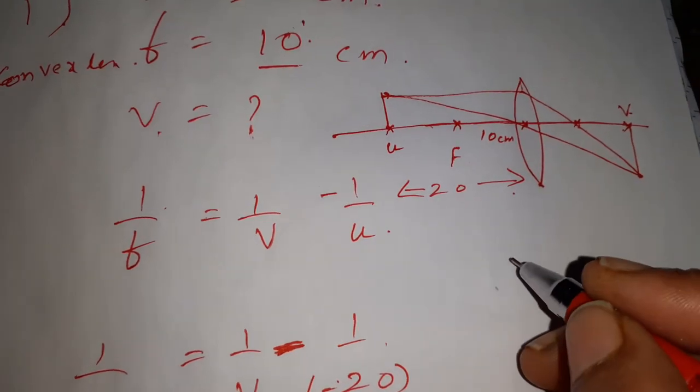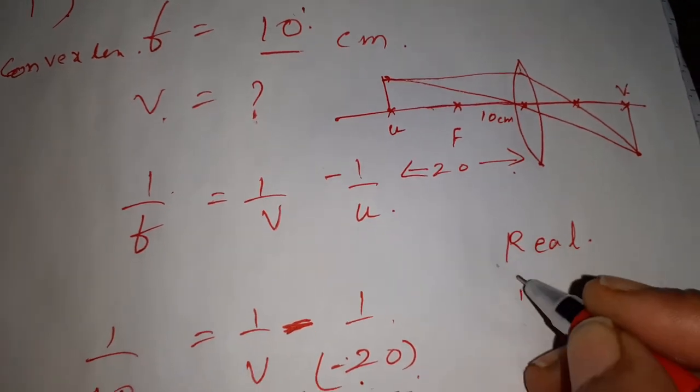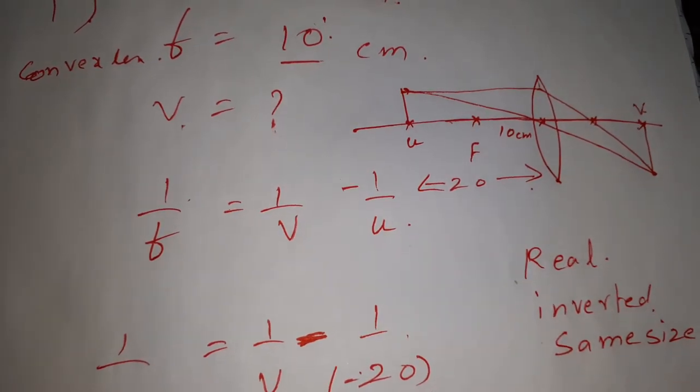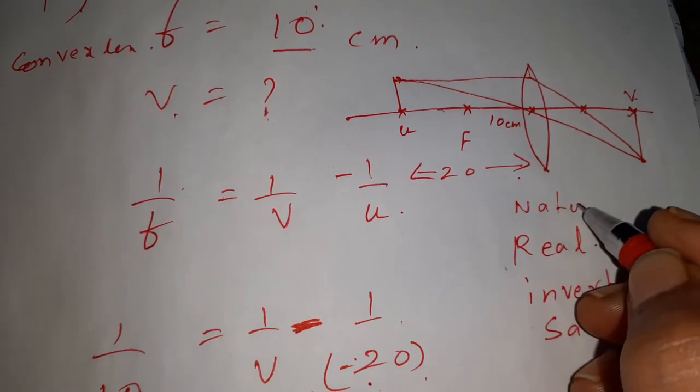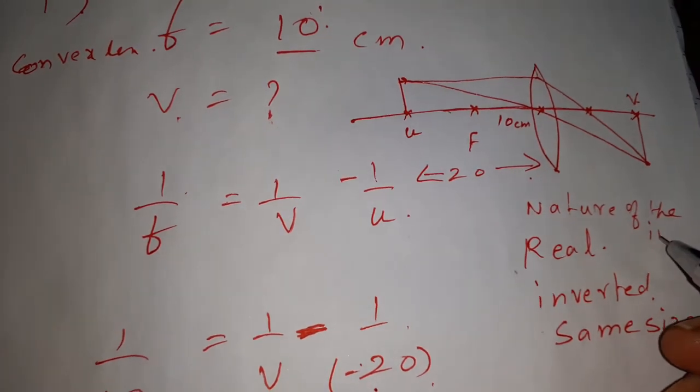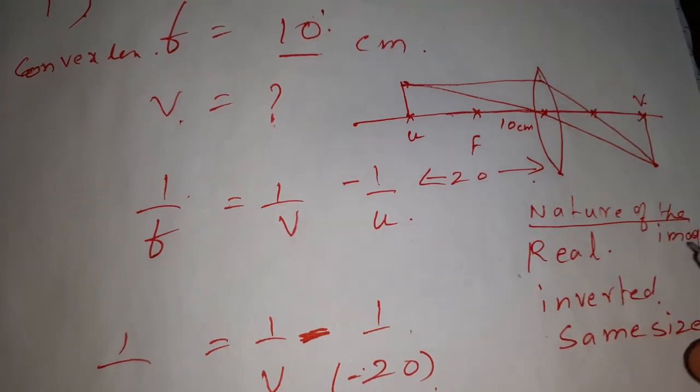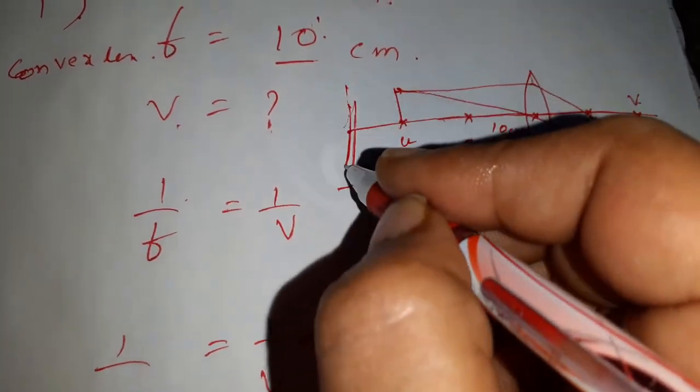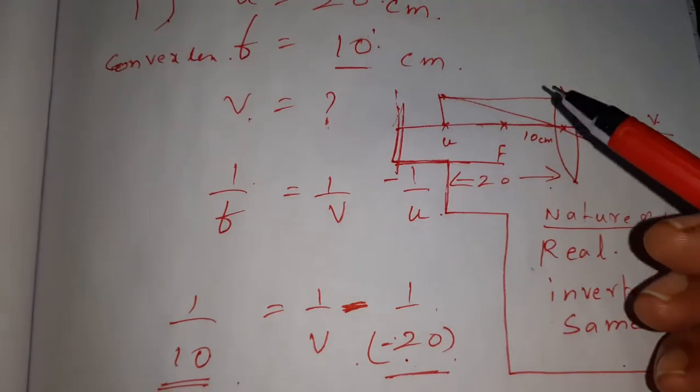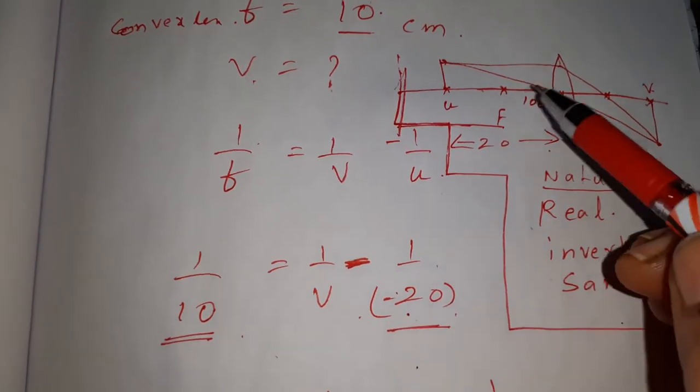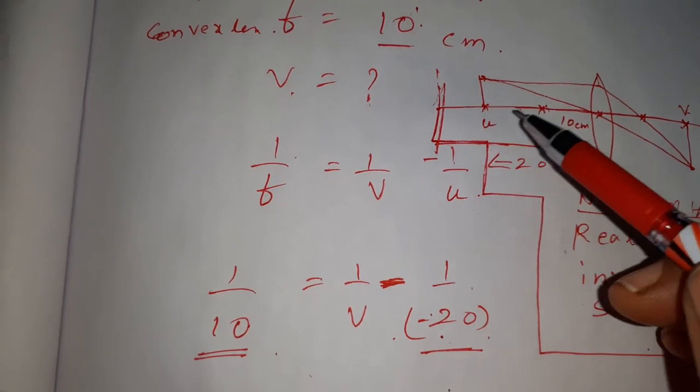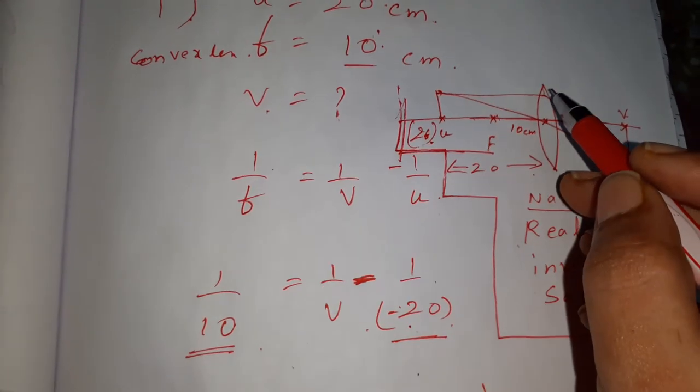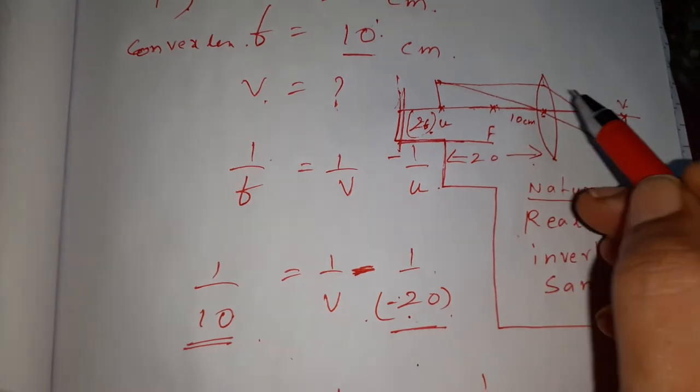So what is the nature of the image? Real, inverted, and same size. This is the nature of the image. Have you understood what I am saying? See, drawing the lens and the principal axis, keeping F at 10 cm, the object distance at 20 cm, that is at 2F. Then parallel ray and the ray which is passing through the center of curvature, optic center.